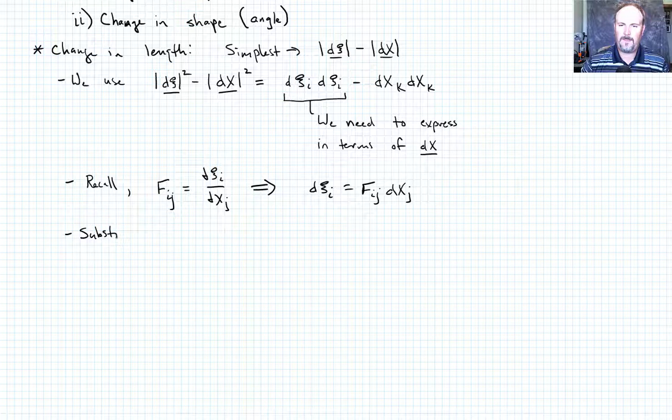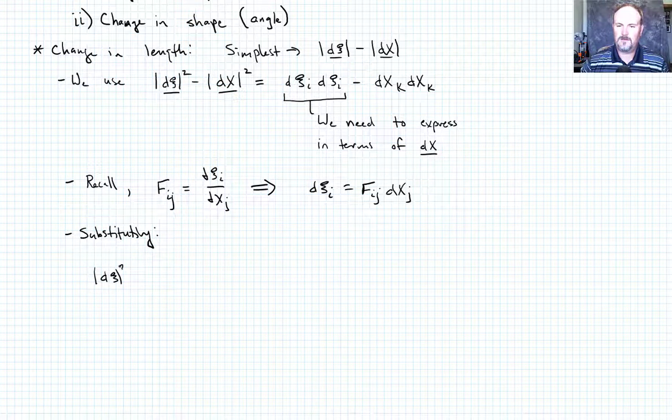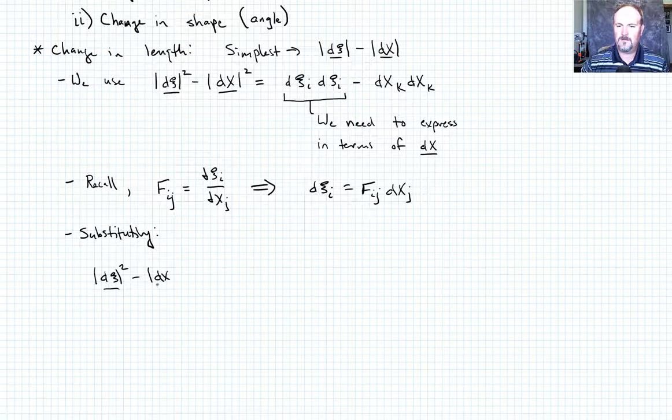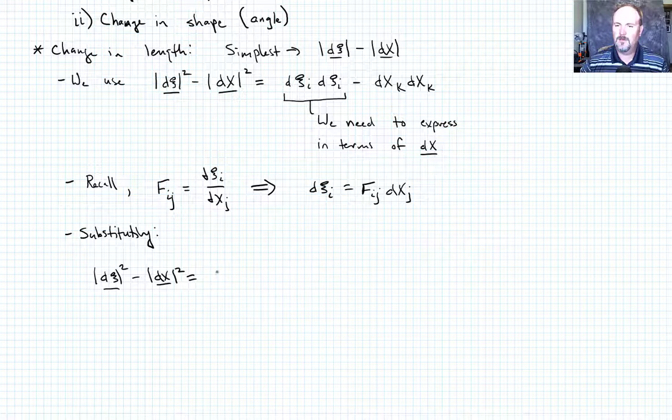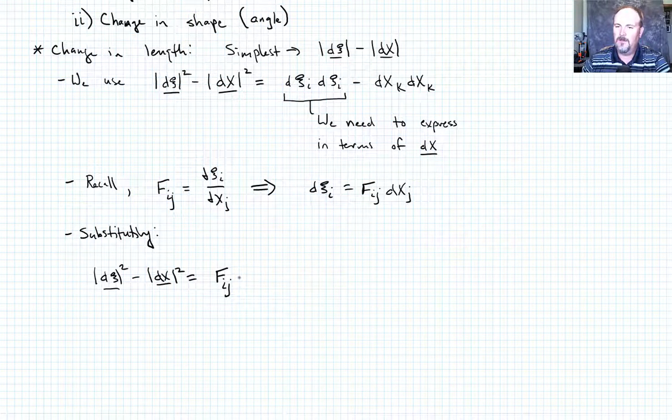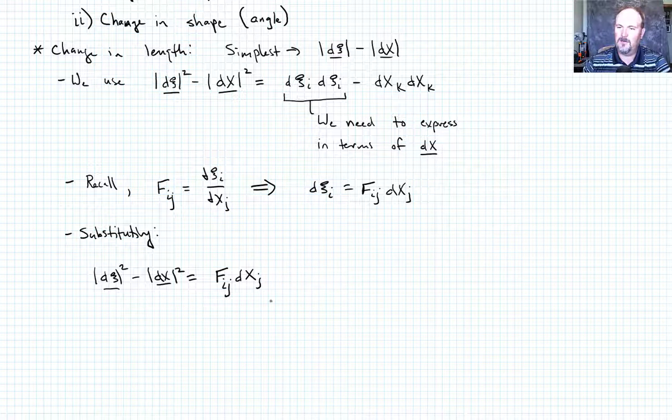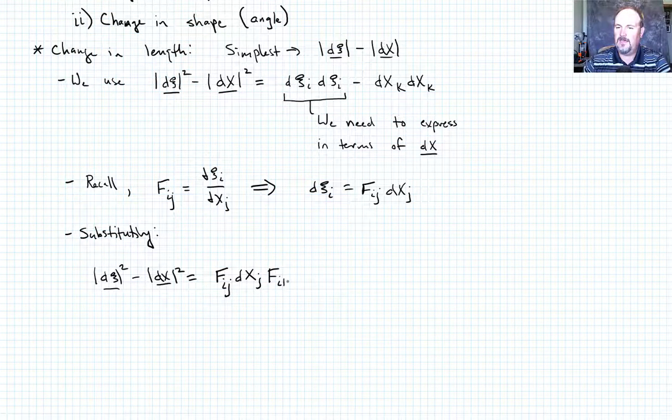So I'll say substituting. I can write now that |dx|² minus |DX|² is going to be equal to F_ij, just like I had before, DX_j. But in this particular term, I'm not free to actually use j again, because I've already used it once. I am free, if I want, I can use k again, because it's in a different term, and it's a dummy index. So I'm going to go ahead and do that and write this as F_ik DX_k, and then minus DX_k DX_k.